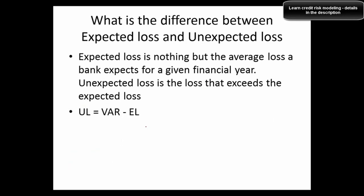NSFR is the available amount of stable funding divided by the required amount of stable funding — essentially how much is available versus what is required. LCR is high-quality liquid assets divided by total net cash flows over the next 30 days. The mandatory threshold for NSFR is 70 percent — it must be greater than 70 percent. What is the difference between expected loss and unexpected loss? Expected loss is the average loss a bank expects for a given financial year. Unexpected loss is the loss that exceeds expected loss — calculated as value at risk minus expected loss.